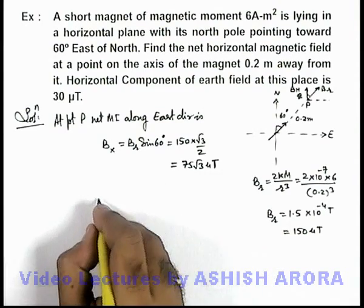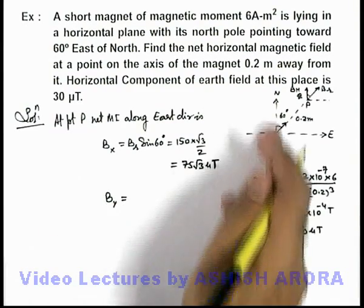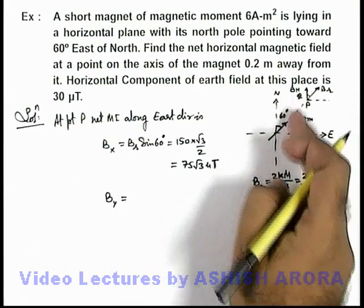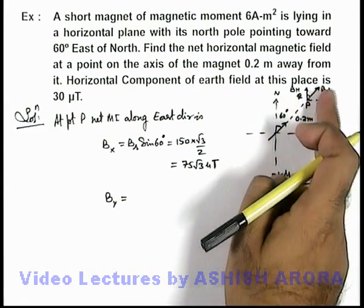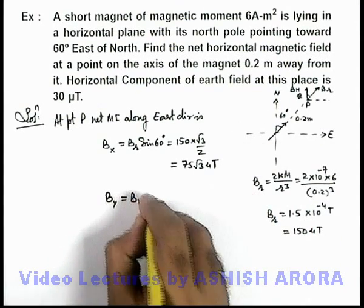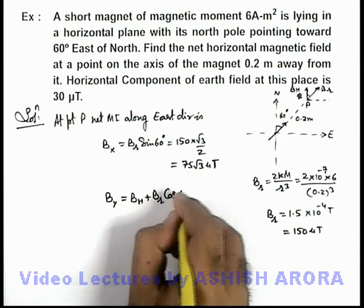And if we calculate the magnetic field in the y direction, or directed toward north, there exists B_h, the horizontal magnetic field, as well as B_r cos 60°. So we'll write it B_h + B_r cos 60°.